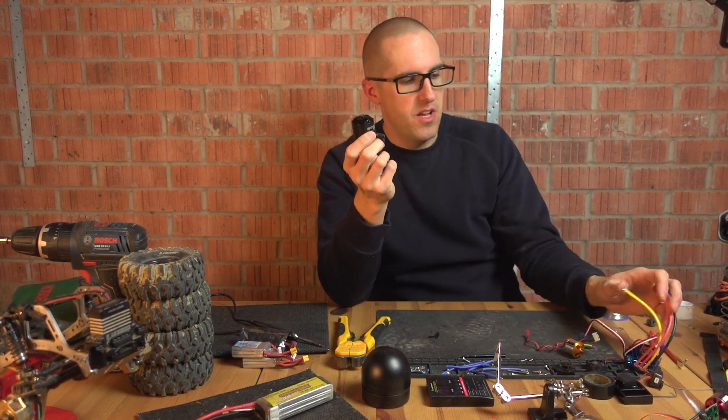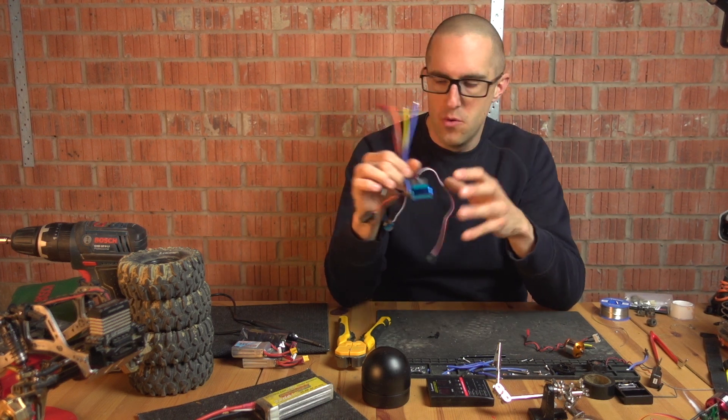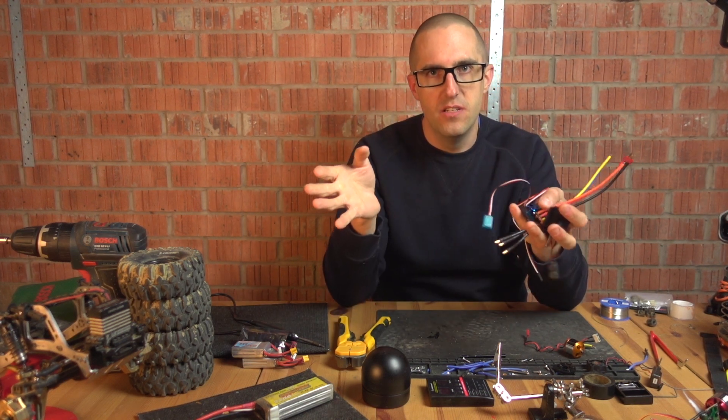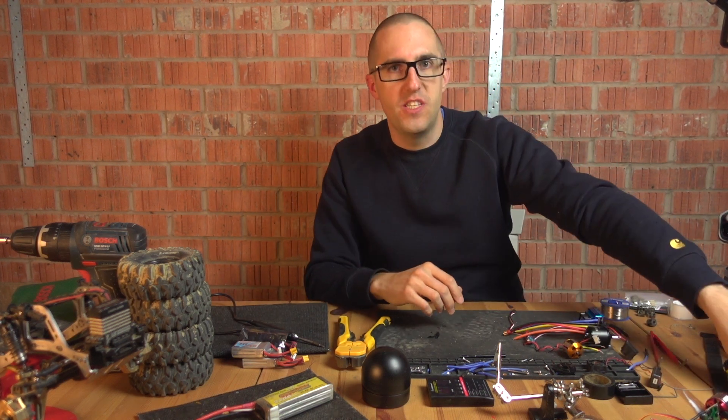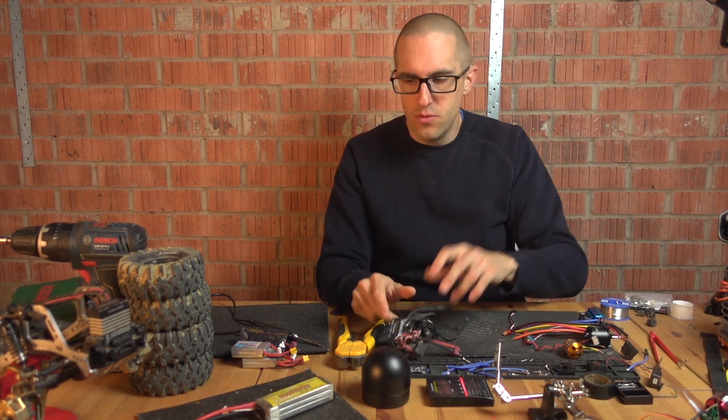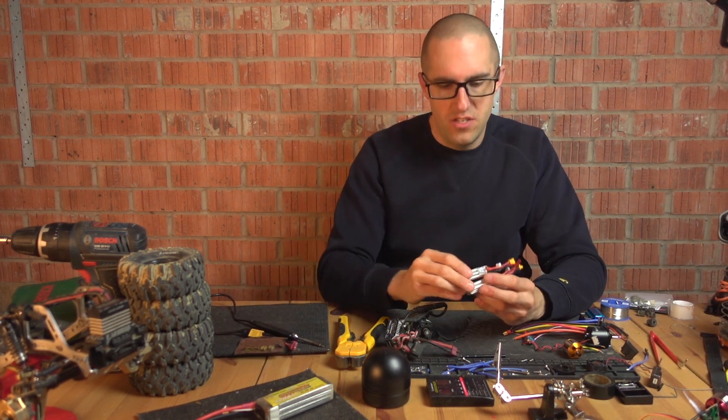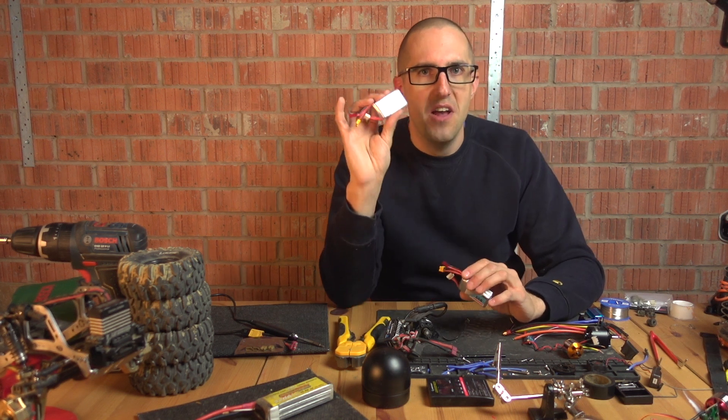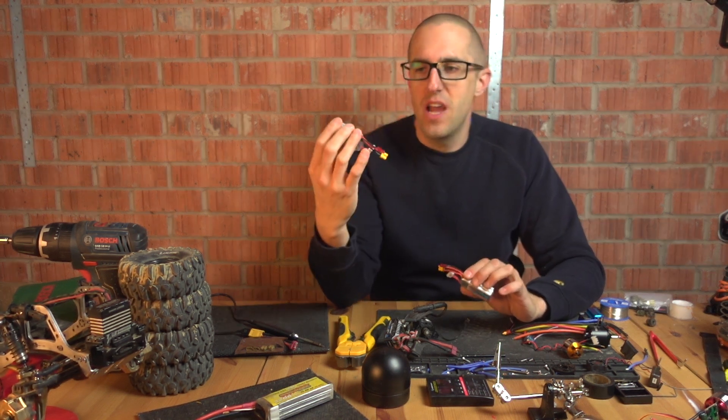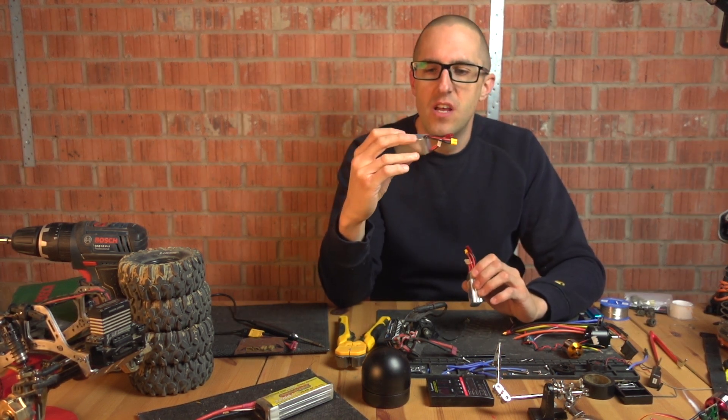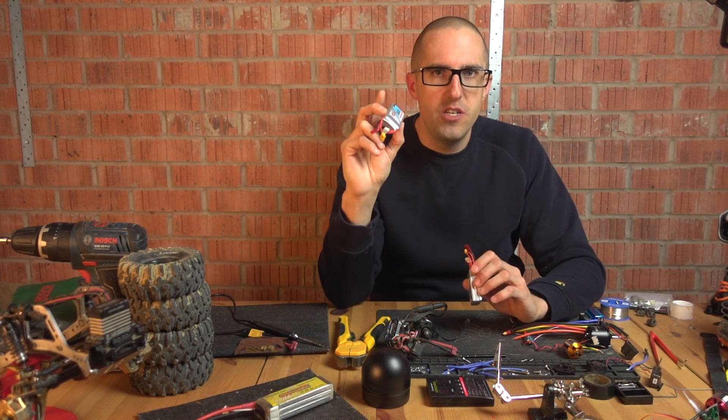Because we're going with a heavier motor and a heavier ESC in order to be lighter than what I had before which is the axe system, I also wanted to try some different batteries. So I've got these little GNB 550 milliamp 3s batteries, I'm not sure if I'm going to use these for the first bits of testing.